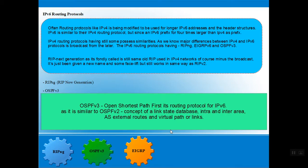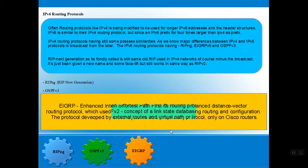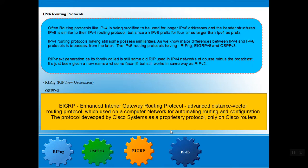Next we have EIGRP — Enhanced Interior Gateway Routing Protocol. It is an advanced distance vector routing protocol developed by Cisco. EIGRP automates routing and configuration of protocols on Cisco routers.